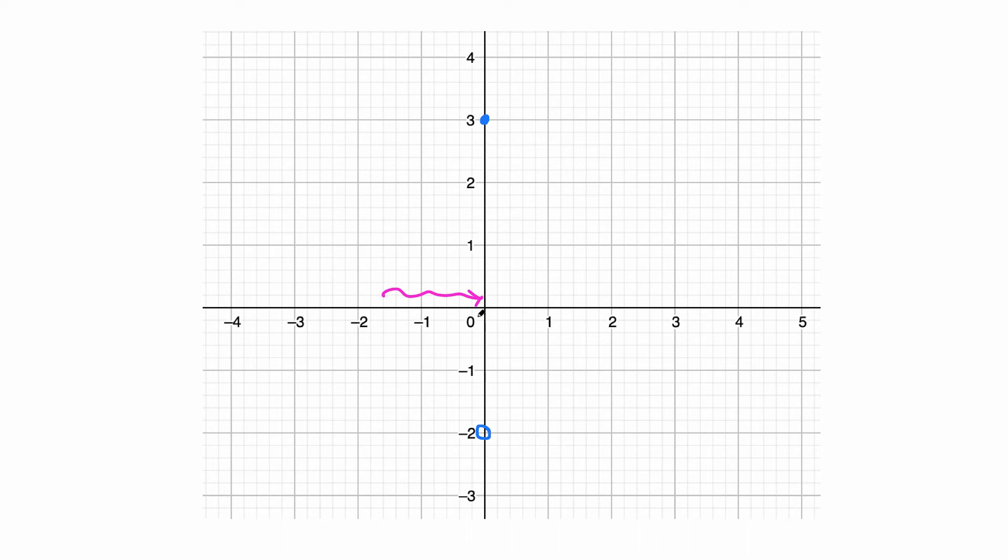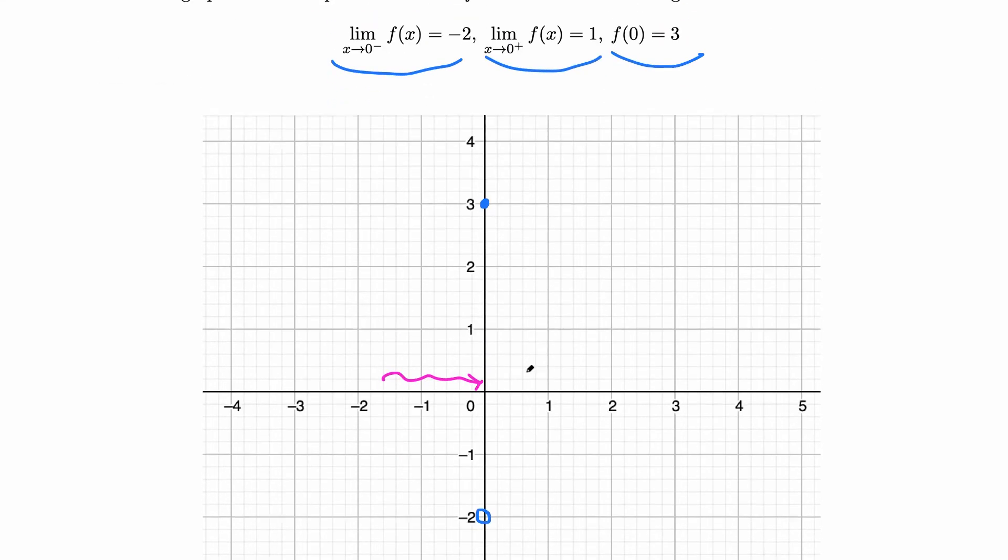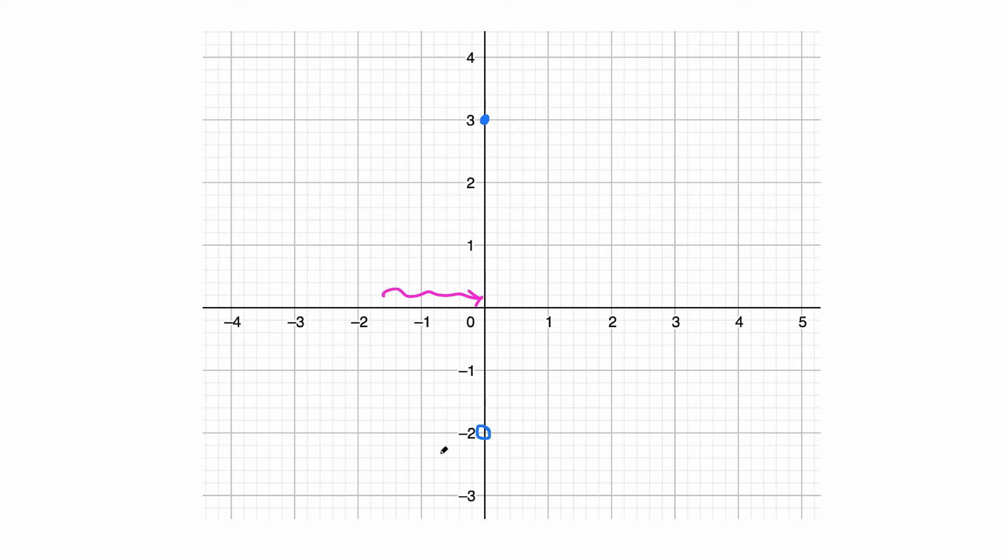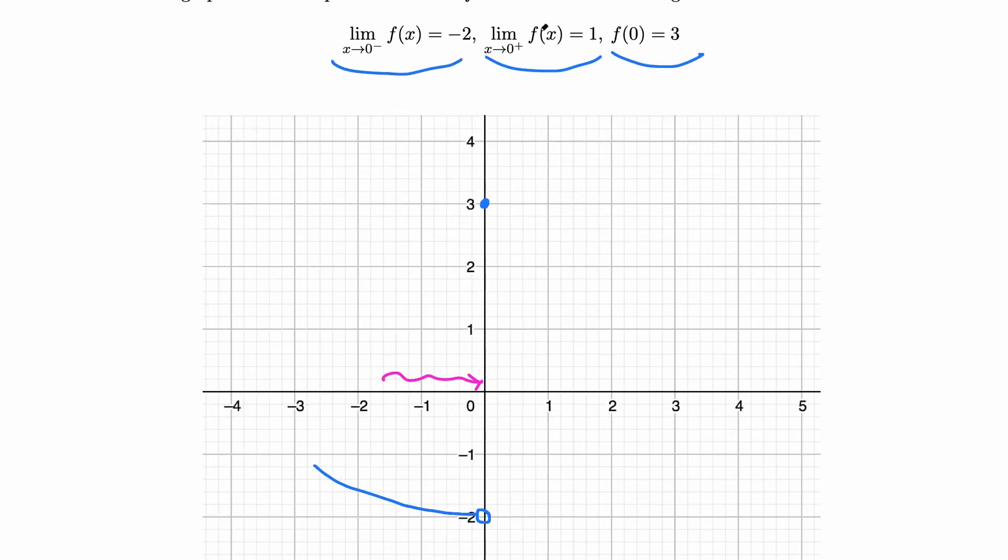When x approaches 0 from the left, the function approaches -2. We don't have any other conditions to satisfy, so it could be coming from here or here - doesn't matter. Just draw one part. The function approaches 1 when x approaches 0 from the right side.